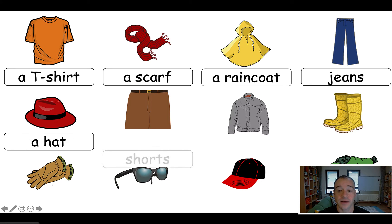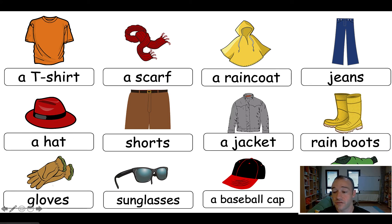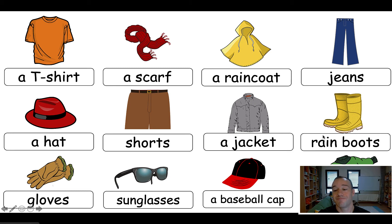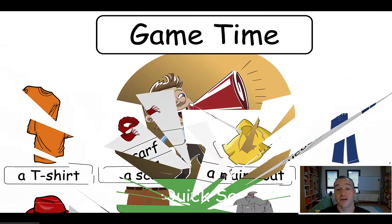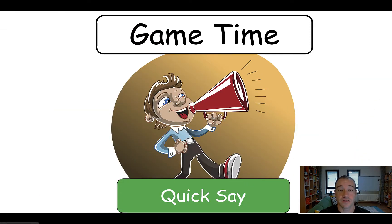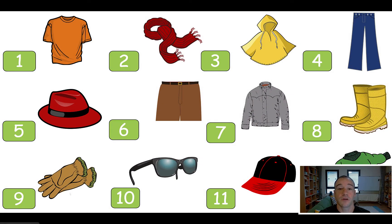After showing them all the words, go through them again. My grade twos all knew t-shirt, scarf, hat, jacket, cap, and sweater. The ones they really didn't know were sunglasses — almost no one knew that — gloves, maybe one or two, rain boots, and raincoat, which the majority didn't know. Jeans, a decent amount knew. So there were probably five or six words I had to teach most of the class, but the others they were familiar with. You have to make a judgment with your own class — if you think this class is good for your grade fours, then teach it to grade four.